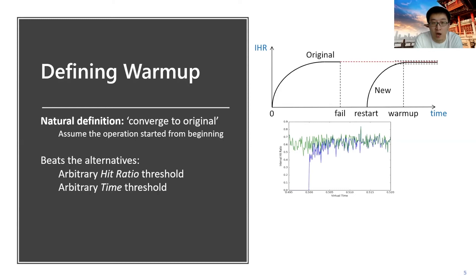Our definition differs from other arbitrary thresholds that are used as the warmup definition. First, some use arbitrary hit ratio thresholds saying that once the cache reaches some specific hit ratio, it's getting warmed up. But as we've shown, the hit ratio could be dynamic during the workload. Sometimes it may never reach a number, or it may even fall down after reaching a high hit ratio.